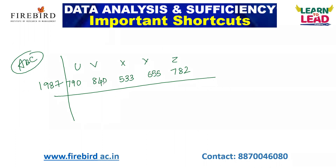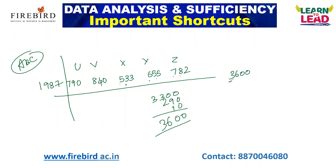First, you have to add all the values. If options are close, do accurate calculations. Add the hundreds: 700 plus 800 is 1500, plus 500 is 2000, plus 600 is 2600, plus 700 is 3300. Then tens: 90 plus 40 is 130, plus 30 is 160, plus 50 is 210, plus 80 is 290. Units: 3 plus 5 is 8, plus 2 is 10 — carry over. Total sum is 3,600. Then 3,600 divided by 5: 720 is your answer.